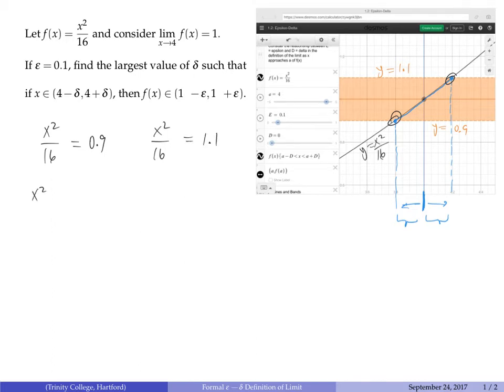Both equations just involve multiplying by 16 and taking the positive square root—positive because we're looking at the right side of this function. We don't care about the negative x values. We can compute that this is approximately 3.7947. On the other side, x is the square root of 16 times 1.1, which is approximately 4.1952.